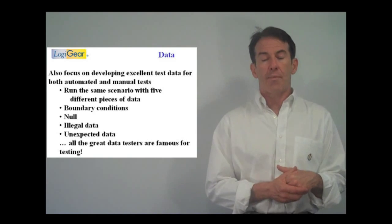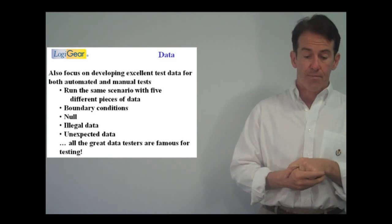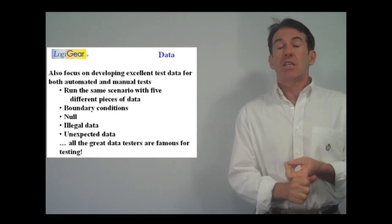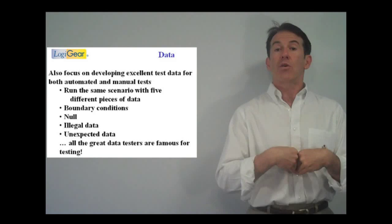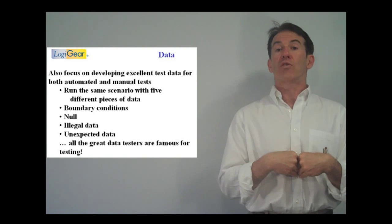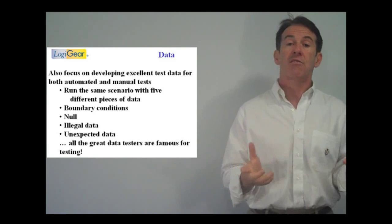To summarize about these rapid SDLCs - Agile, XP, Scrum - the team commits to delivery. There's no longer a single point of failure, no longer a QA person, no longer a single person who's responsible for guaranteeing quality. The team commits, the team owns quality. That's really a great step forward.